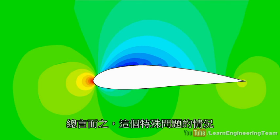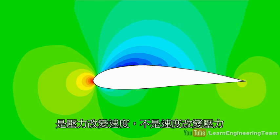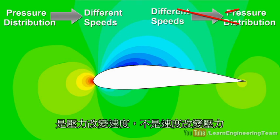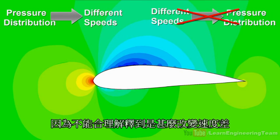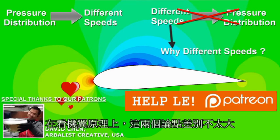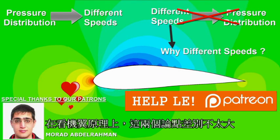In short, for this particular problem, the pressure distribution makes the particles flow at different speeds, but the reverse argument does not hold. The different speeds of the particles are not what make the pressure distribution. Because for the second textbook argument, there is no logical explanation for what causes this speed difference. These two arguments are not two different ways of looking at the same thing.